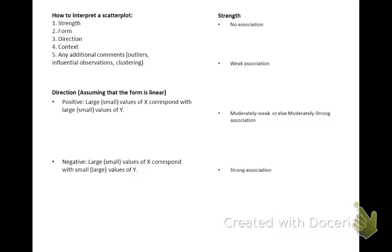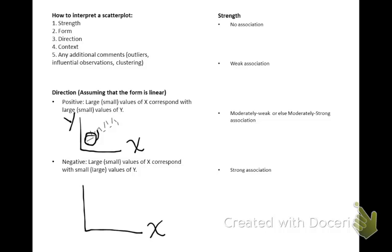The direction of a scatter plot mainly determines whether it is overall increasing — a positive direction. You could think of a positive slope: large values of x correspond with large values of y. Or in reverse, if the scatter plot has an overall negative direction, it will run downward, and small values of x correspond with large values of y, while large values of x correspond with very small values of y — think of a negative slope.